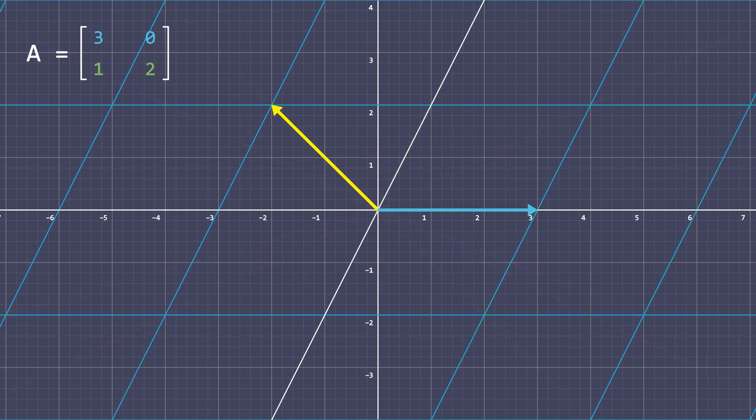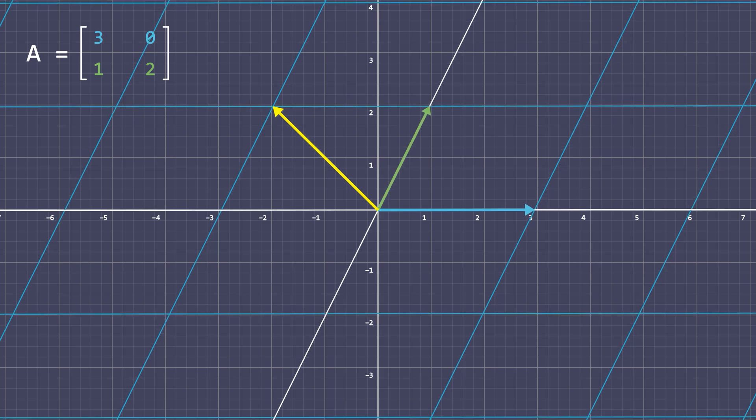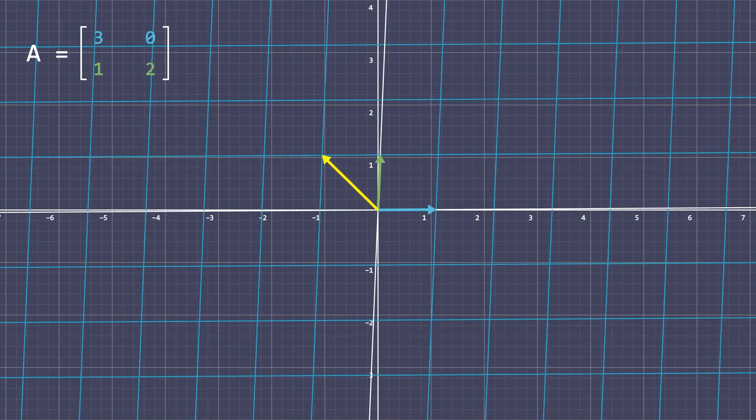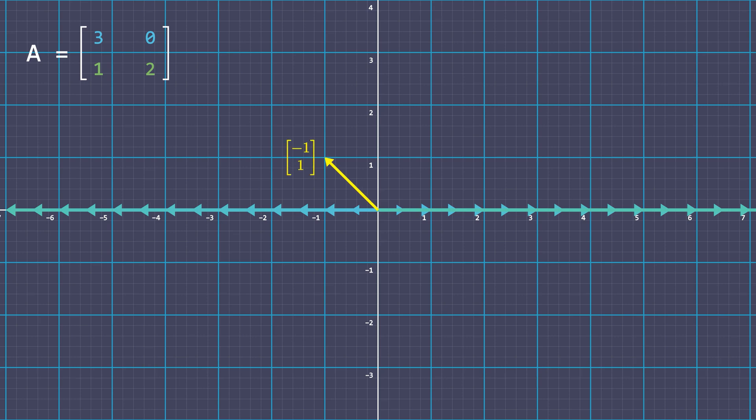Notice that i hat is stretched by a factor of 3, and the yellow vector is stretched by a factor of 2. Now, the way linear transformations work, any other vector on the x-axis is also stretched by a factor of 3, and any other vector on the span of the yellow vector is stretched by a factor of 2 and hence remains on its own span.